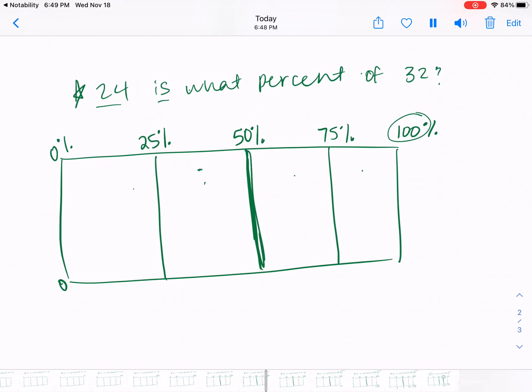It says 24 is what percent of 32? That of, remember of, means whole. So we're trying to find the percent of 32. So 32 is my total. My bottom part of my bar is going to represent the number that we're trying to find.